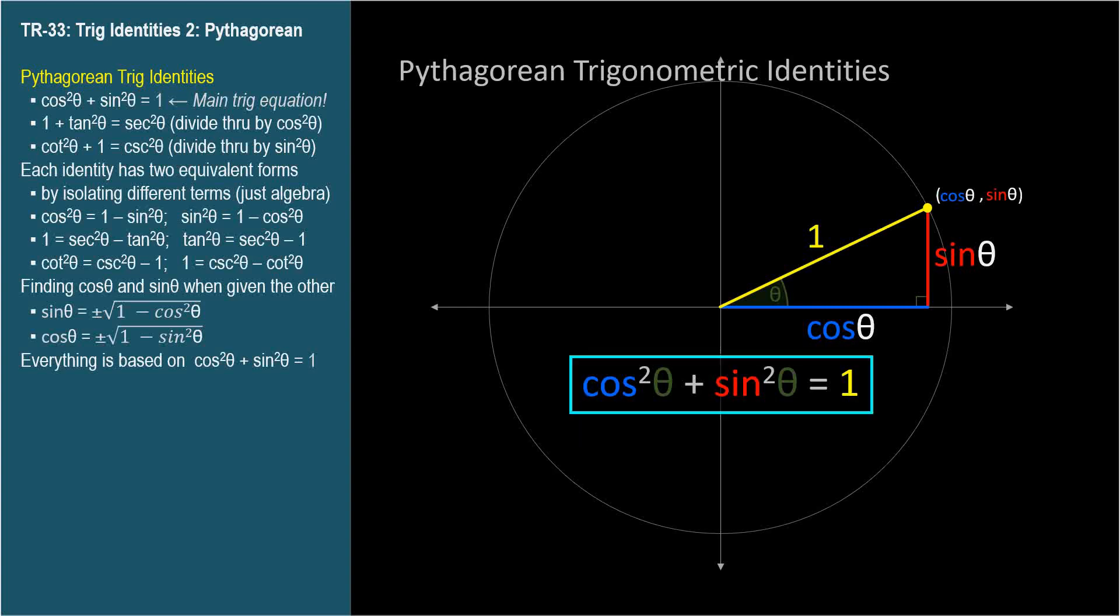This is our first Pythagorean trig identity, because it comes straight from the Pythagorean theorem. It's probably the most famous equation in trigonometry. Sine squared theta plus cosine squared theta equals 1. The terms can switch places, of course. It's the same identity.